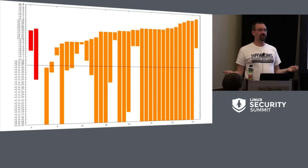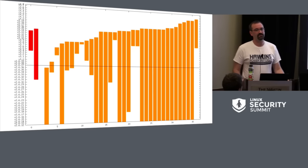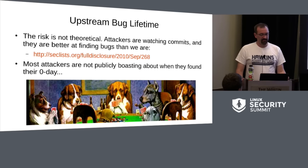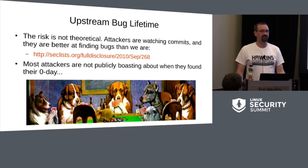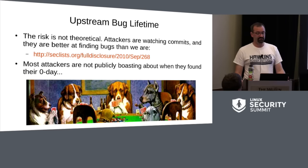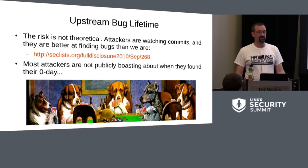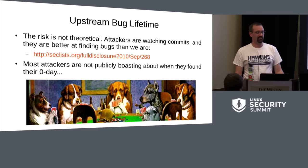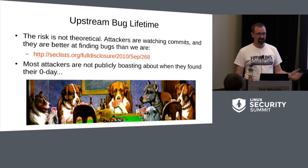A question I get a lot is: isn't this just theoretical? No one's actually finding these bugs to begin with. That's demonstrably false. People are finding these bugs sometimes immediately when they're introduced. There's a link to folks who found a critical bug when it was introduced, used it for two years before it was fixed upstream. Most attackers don't publicly boast about the bugs they find, so the window of opportunity for attack is still large and not theoretical.